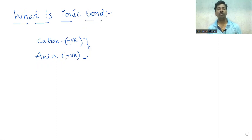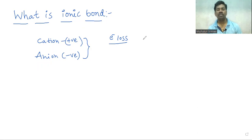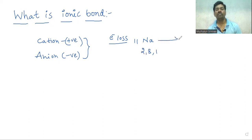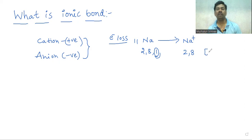Cation is formed when an atom loses an electron, and anion is formed when an atom gains an electron. For example, sodium has atomic number 11, so its electronic configuration is 2, 8, 1. In its valence shell there is one electron. If sodium loses this one electron, it will acquire Na plus — a positively charged particle — and as a result it will acquire the nearest noble gas, that is neon, electronic configuration.